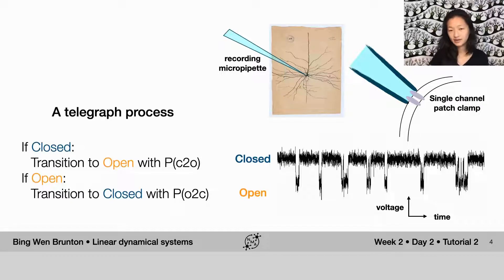So we're going to model this by what's known as a telegraph process. And a telegraph process is really simple. It has two states, it's either closed or open.